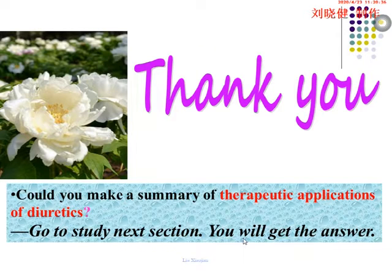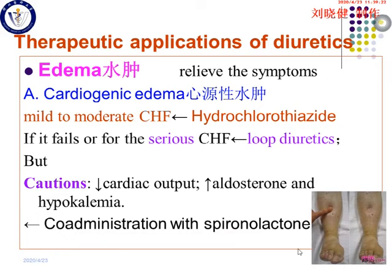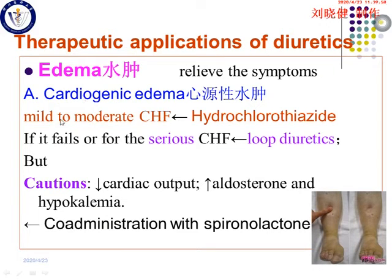Now let's summarize the therapeutic applications of diuretics. In this chapter, you studied many agents with different diuretic characteristics and different therapeutic applications. Edema is the common indication for diuretics, and edema usually occurs in different tissues or organs with different symptoms, so diuretics are used to relieve the symptoms caused by edema. This includes cardiogenic edema, caused by cardiac disease, usually presenting as congestive heart failure edema occurring in the lower limbs.